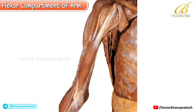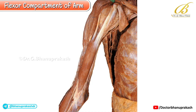Today, let's explore the anterior or flexor compartment of the arm. Starting from the superior aspect, notice that the anterior or clavicular fibers of the deltoid muscle have been cut and reflected to expose the deeper muscles of the arm. The remaining part of the deltoid can be seen converging towards the deltoid tuberosity.